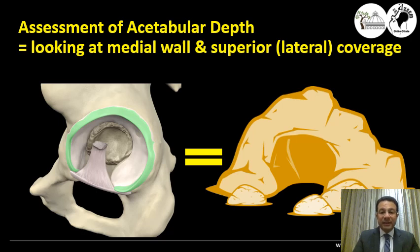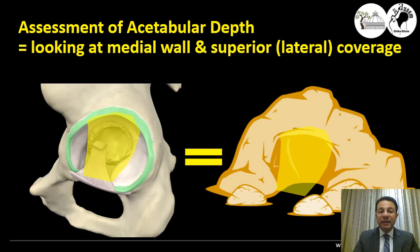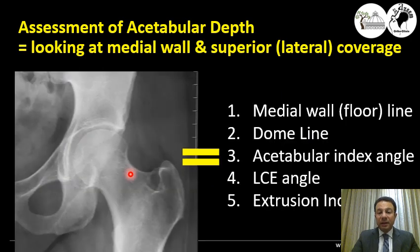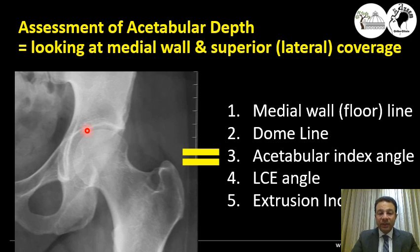Collecting all these data, assessment of acetabular depth involves looking at the medial wall of the cave as well as the lateral or superior coverage, or the dome. It can be done by measuring the medial floor line, the dome line, the angles of the acetabular index and the lateral central edge angle, as well as looking at how much of the head is covered and the extrusion index.